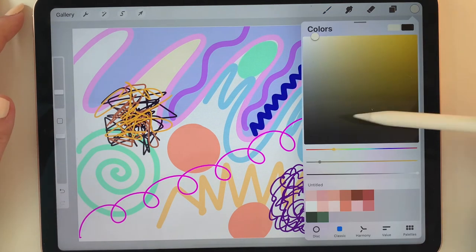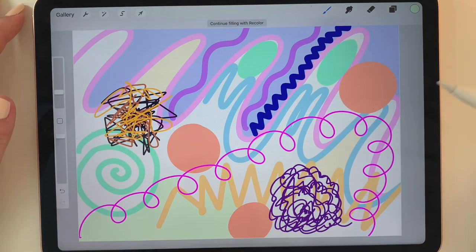I'm finishing off by dragging some colors into empty shapes to fill them in, and adding some finishing touches.